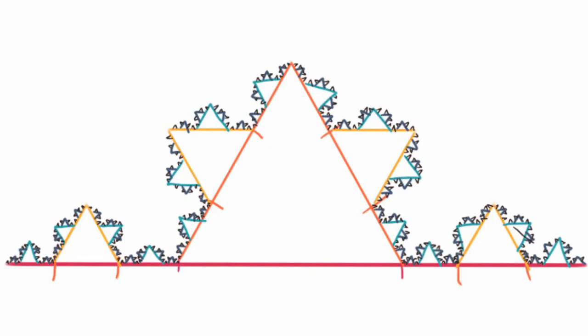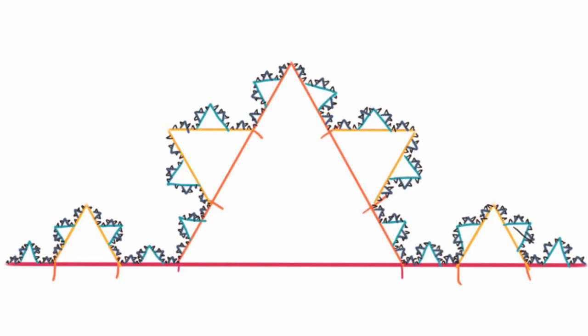Here's where things get really interesting. A Koch snowflake has an infinite perimeter, but a finite area. Confused? Let's break it down.